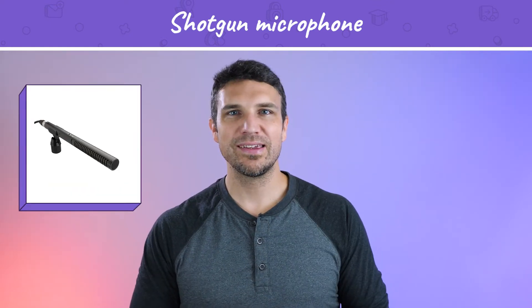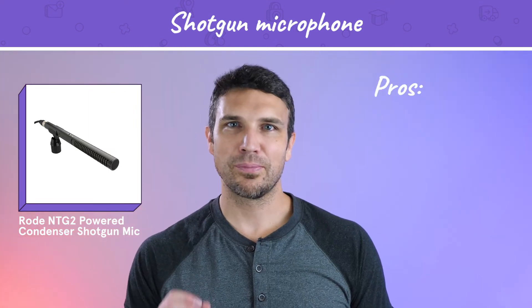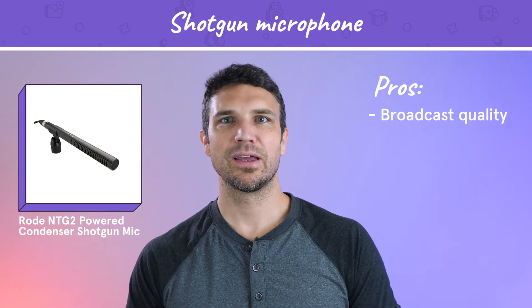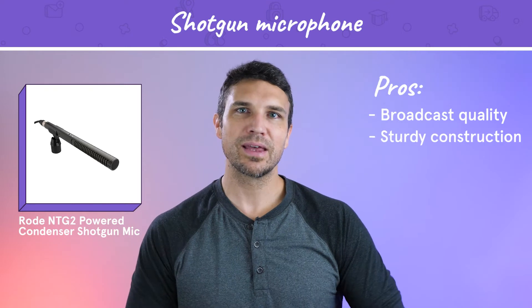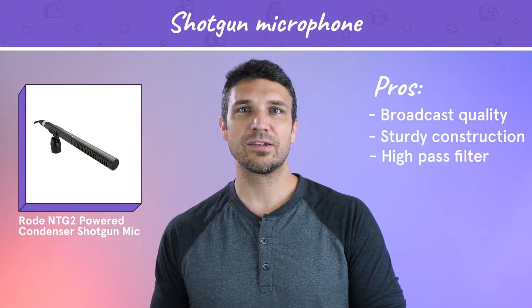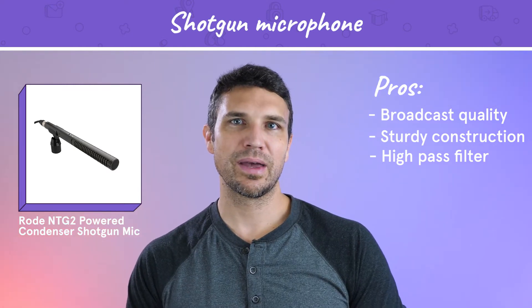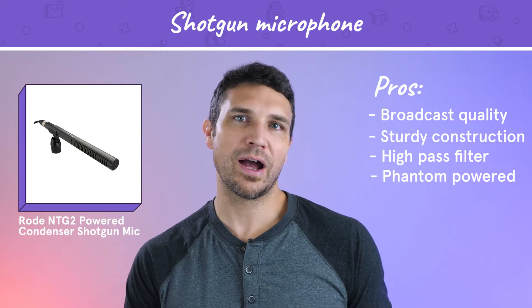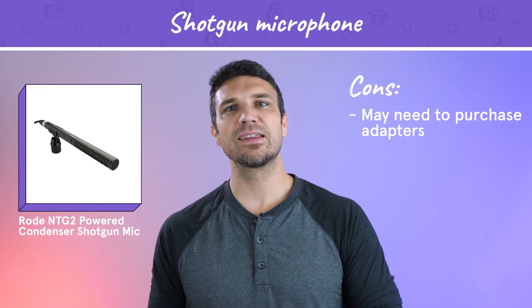On the high end is the Rode NTG2 powered condenser shotgun microphone. This is a broadcast quality mic that does an excellent job of capturing its subject without getting additional background noise in the mix. It's built in a sturdy metal enclosure and features a high-pass filter to get rid of unwanted noise like air conditioner or road noise. While it does run on a single AA battery, it can also run on phantom power from a professional camera or powered mixer. If you intend to use this directly with your camera, you'll need to get the proper adapters.